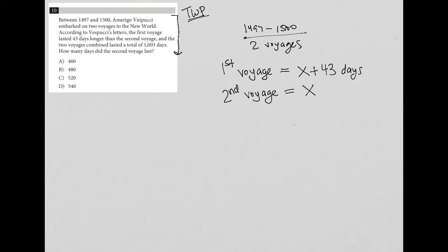The two voyages combined lasted a total of 1003 days. So if I combine these two voyages, I'd have X plus 43 for voyage one plus X for voyage two. And all together, that adds up to 1003.